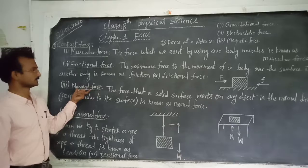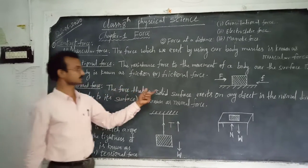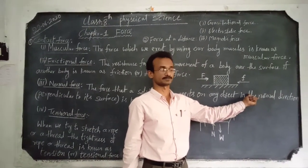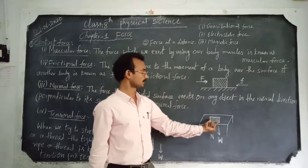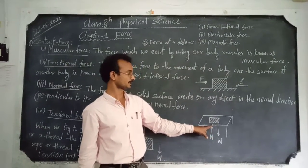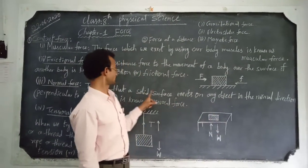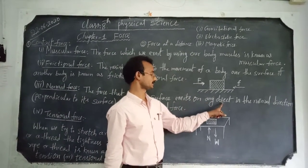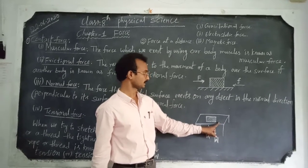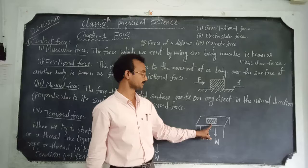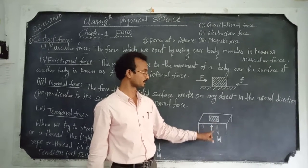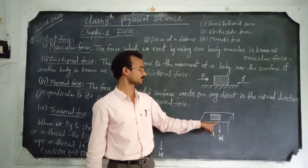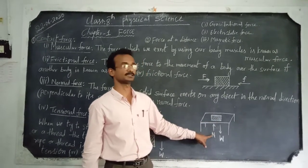Another one is normal force. The force that a solid surface exerts on any object in the normal direction is known as normal force. For example, a block placed on a table — the solid surface applies some force in the normal direction on the book. That is why the book is not falling down. This perpendicular force applied on the book by the solid surface is called normal force.